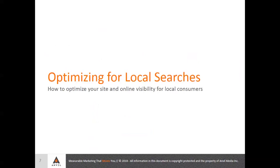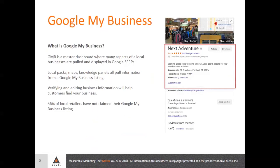Here's where it gets really interesting. We're going to be talking about optimizing for local searches and how you would go about doing that. The first thing we'll talk about is Google My Business. It is essentially a master dashboard where several different aspects of your local business can be interacted with and changed with regard to the listing you'll get on the SERPs and the knowledge panel that displays. Local packs, maps, knowledge panels — all of this stuff pulls information from a Google My Business listing, so verifying and editing business information here is really essential.